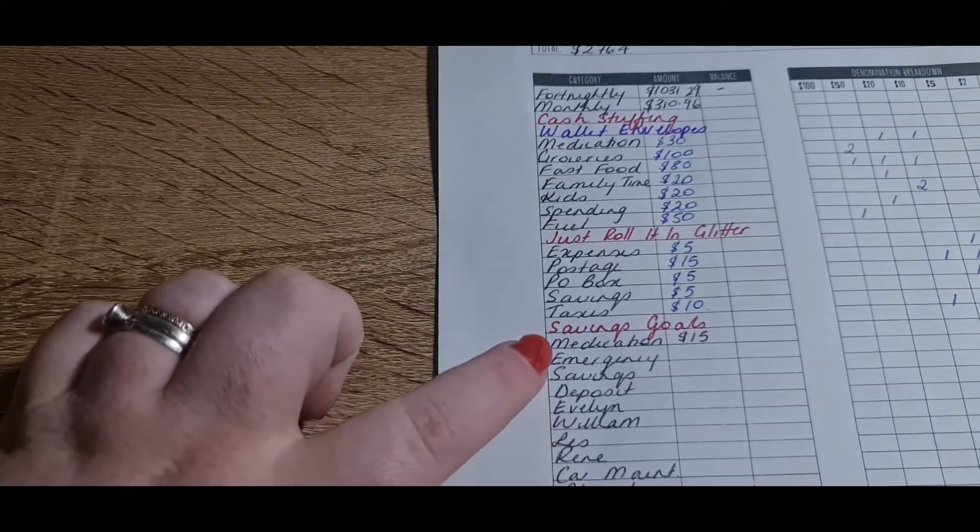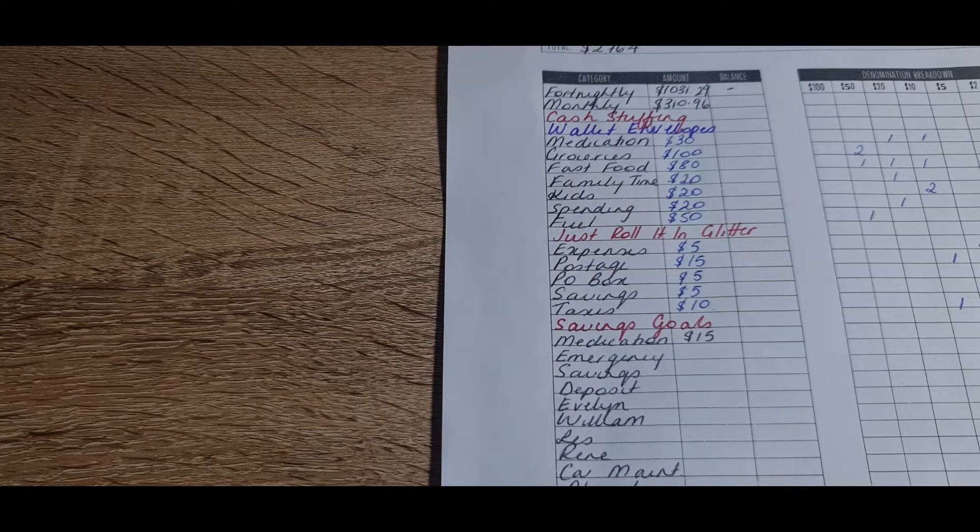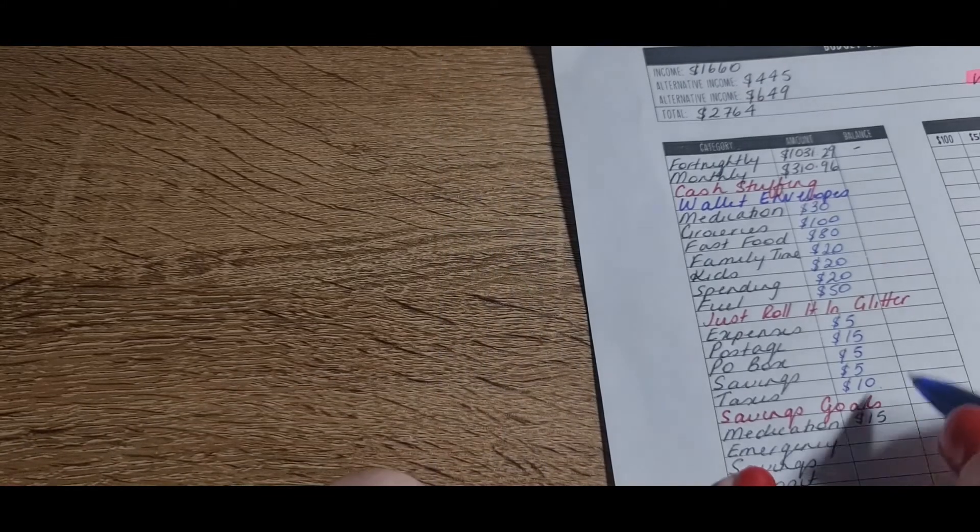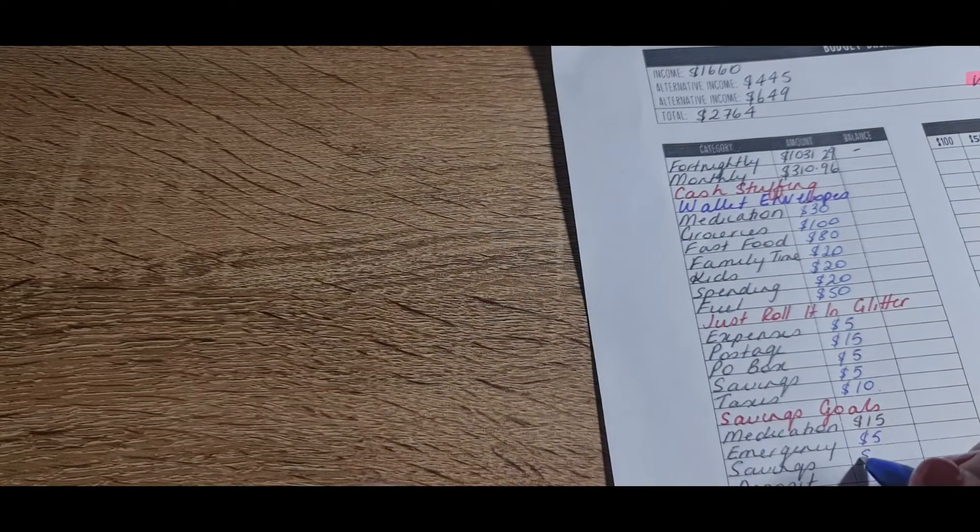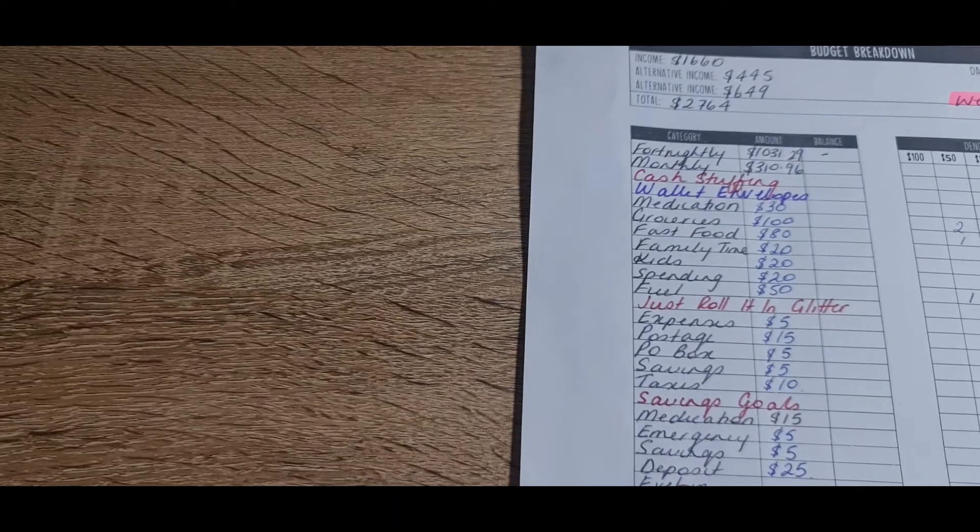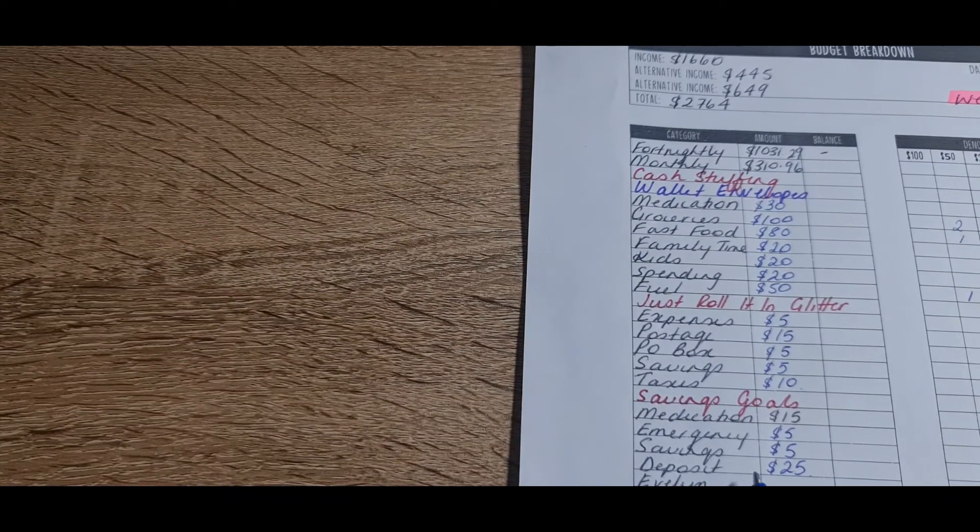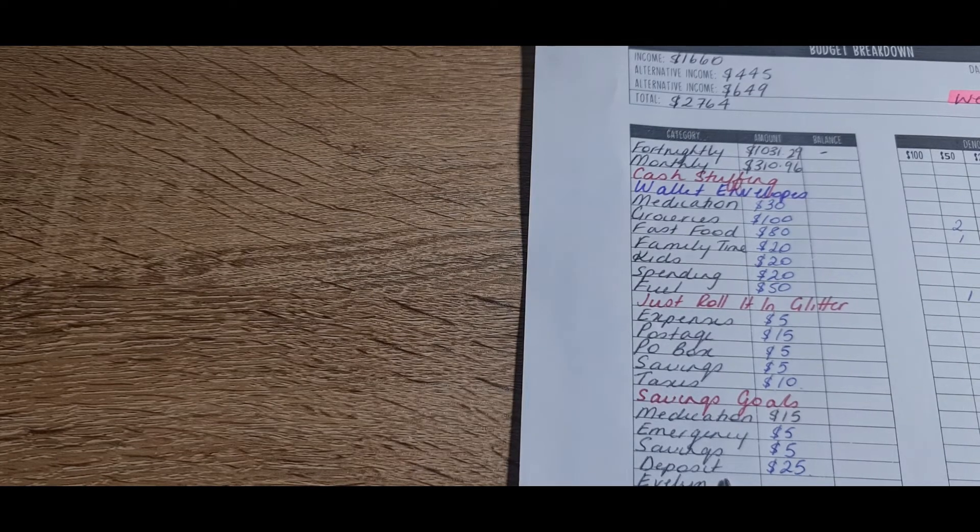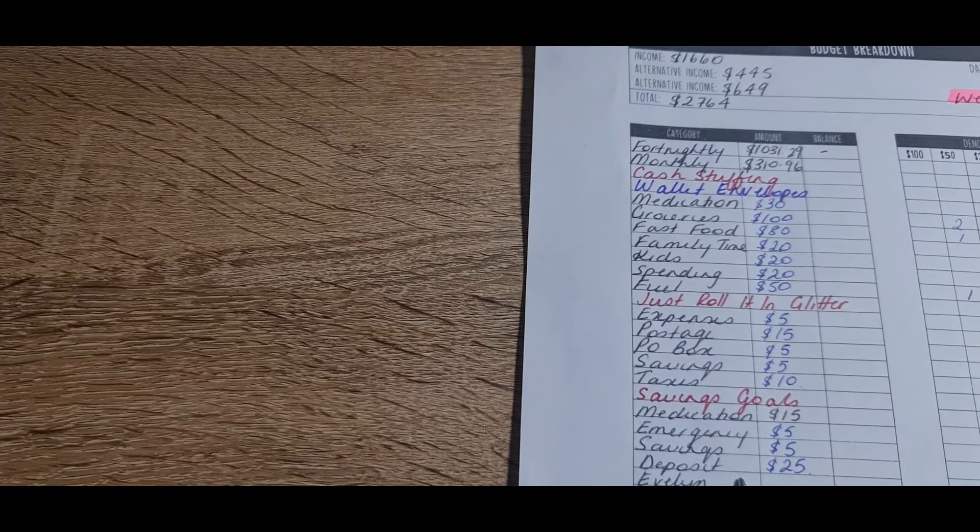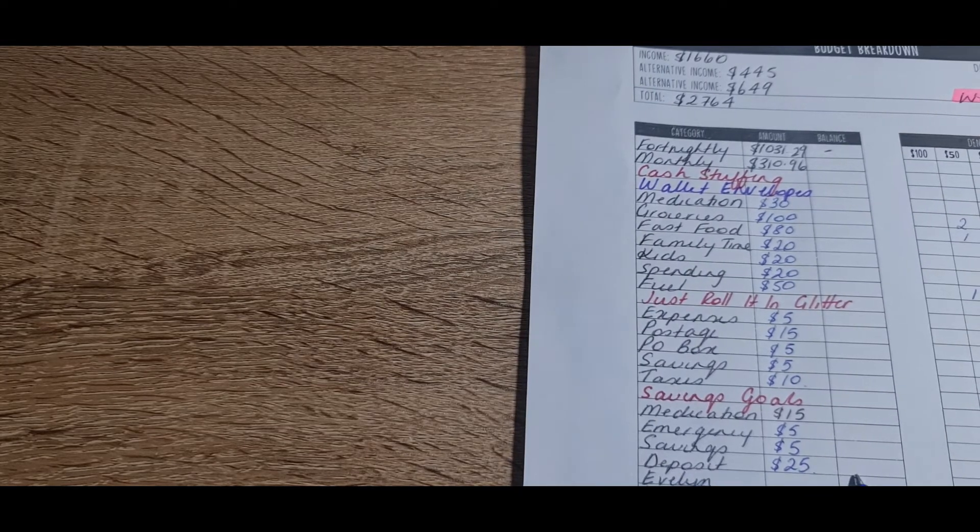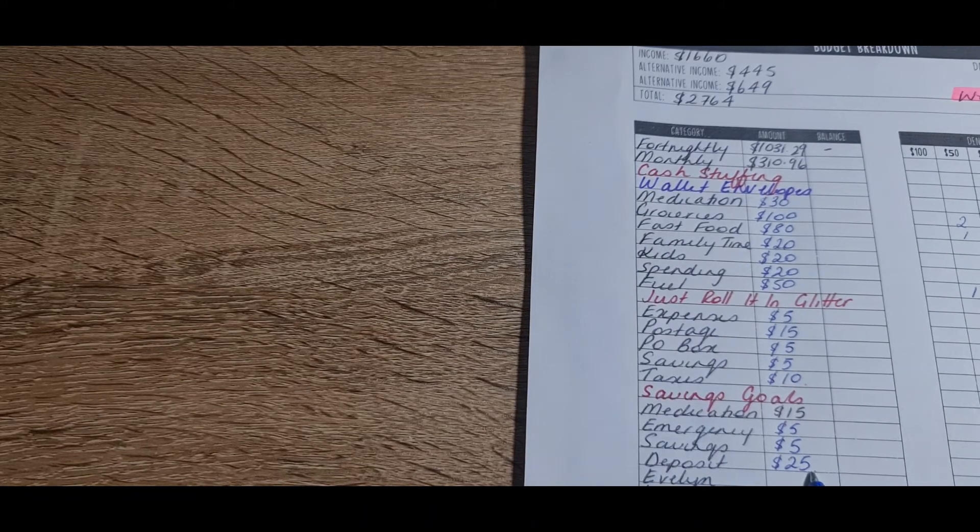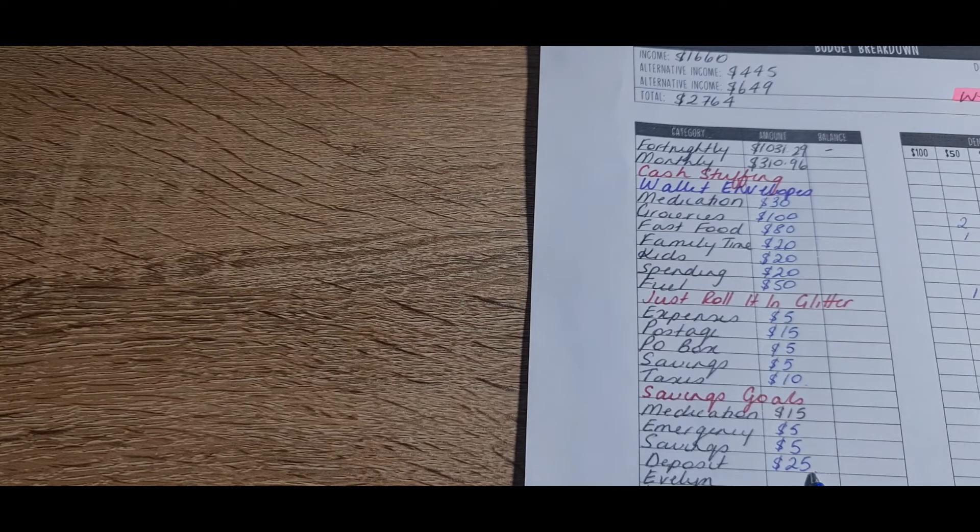Okay, savings goals. So now we're into the budgeting binders. Emergency is getting $5, savings is getting $5, and deposit is getting $25. Now with our deposit, I do double payments, so I put money into a bank account that goes directly from my wage, and I cash stuff a little bit extra. Most of my savings challenges money is going into my deposit, so I've decided to include it all together in the envelope.